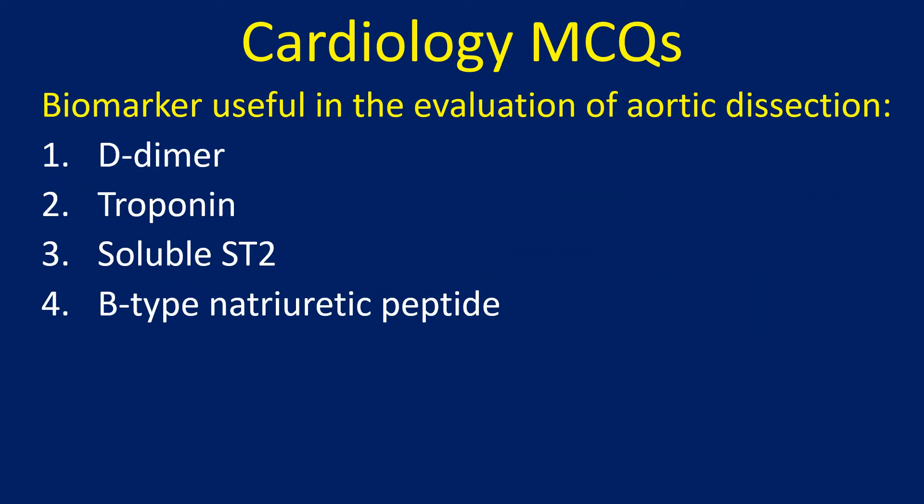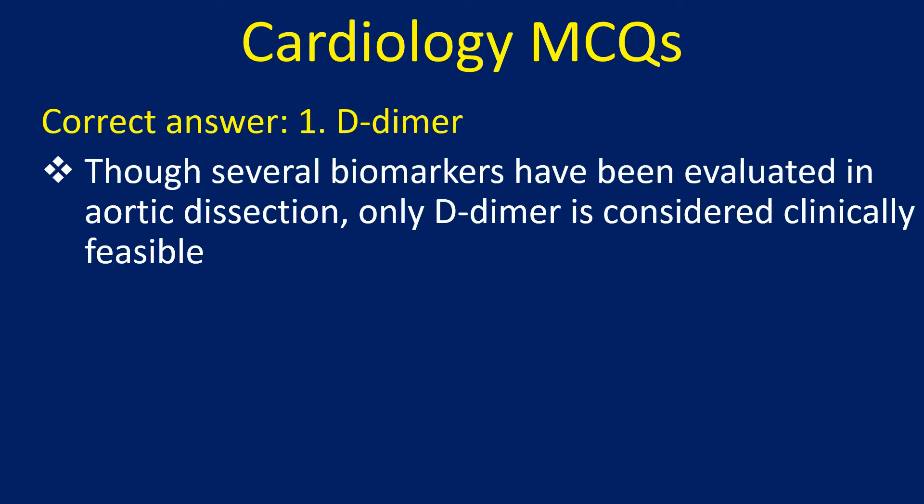Biomarker useful in the evaluation of aortic dissection: 1. D-dimer, 2. Troponin, 3. Soluble ST2, 4. B-type natriuretic peptide. Correct answer: 1. D-dimer.